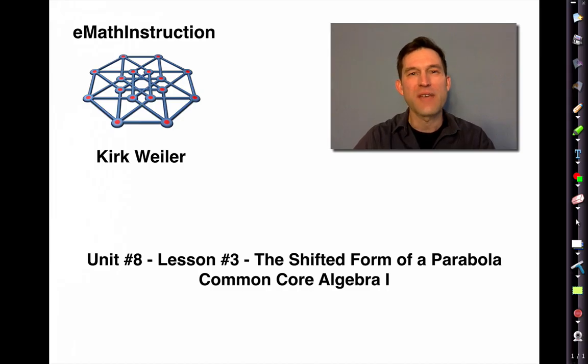Okay. That was our first exposure to the vertex form of a parabola, the shifted form of a parabola. A way that you can look at a parabola and figure out the turning point by just that form. Of course, it begs a lot of questions. What happens if it's in standard form? What happens if the quadratic is written as 5x² plus 2x minus 3, right? It's not written in the right form. We'll be getting to that eventually. But for now, thank you for joining me. As always, this has been an eMath instruction common core algebra one lesson. I'm Kirk Weiler. And until next time, keep thinking and keep solving problems.